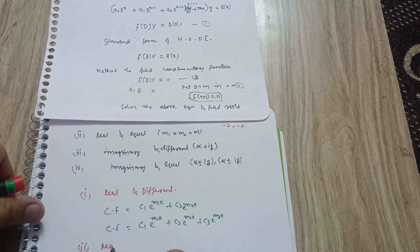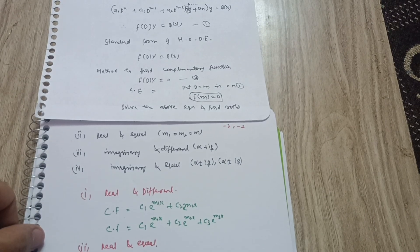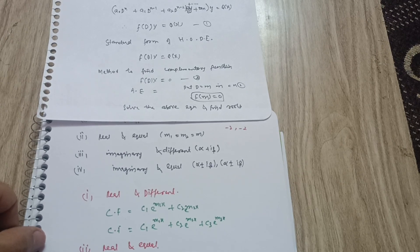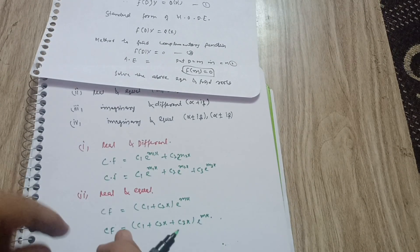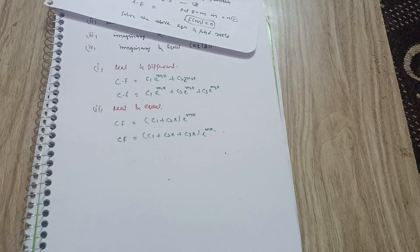For real and equal roots, the complementary function is: CF = (c₁ + c₂x) · e^(mx). If there are more than two equal roots, you extend it to: (c₁ + c₂x + c₃x²) · e^(mx). Use this formula whenever you get real and equal roots.